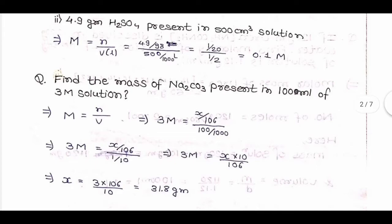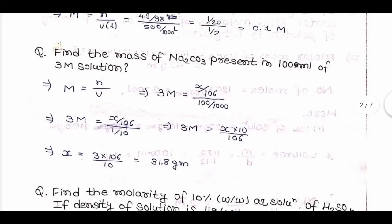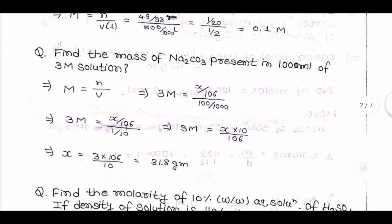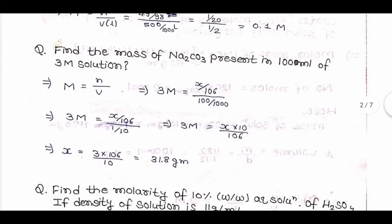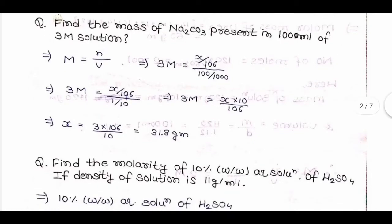Next question: find the mass of Na2CO3 present in 100 mL of a 3M solution. Using molarity = n/V: 3M = (x/106) / (100/1000). This implies 3 = (x/106) × 10, so x = (3 × 106) / 10 = 31.8 grams.